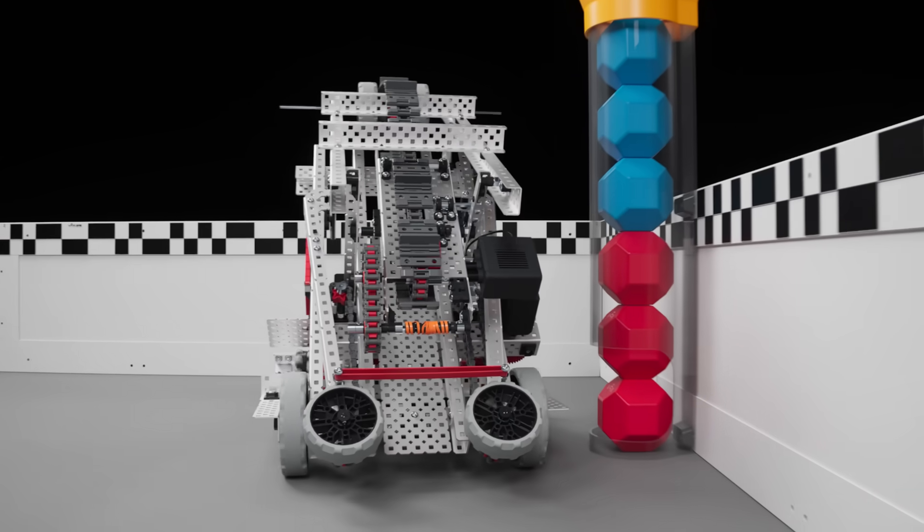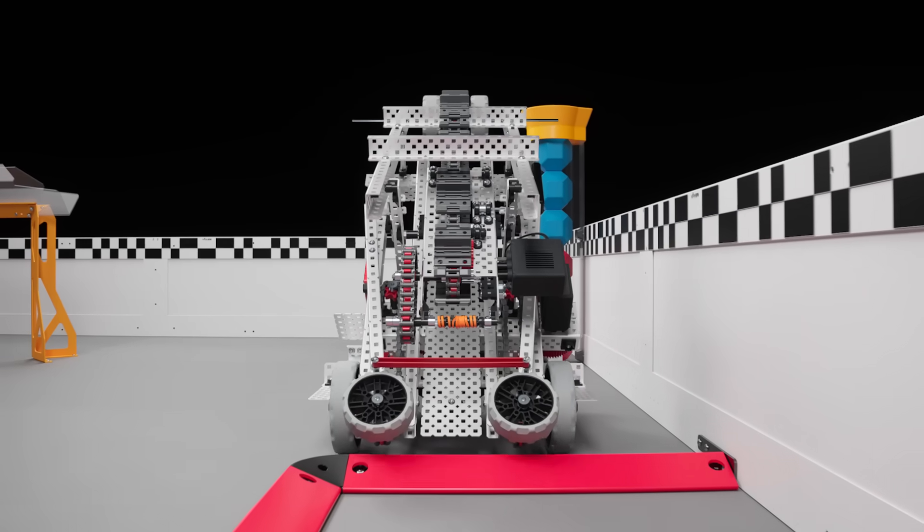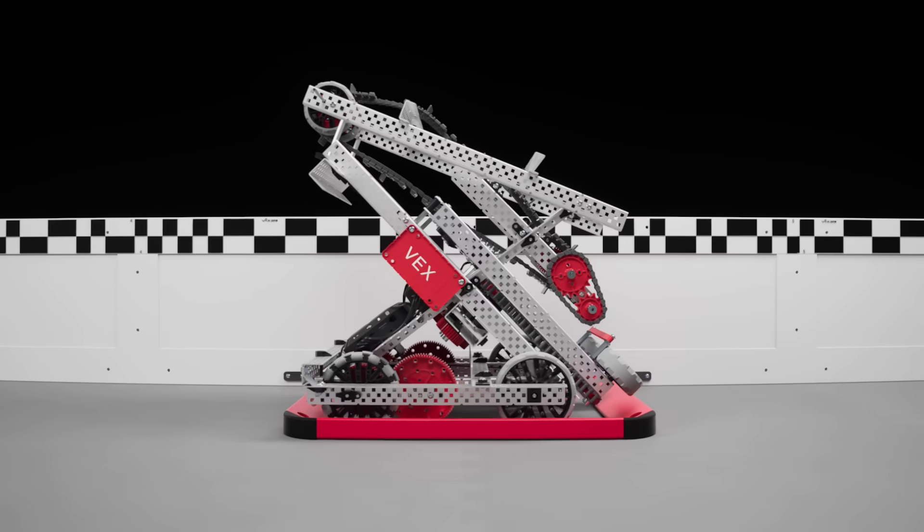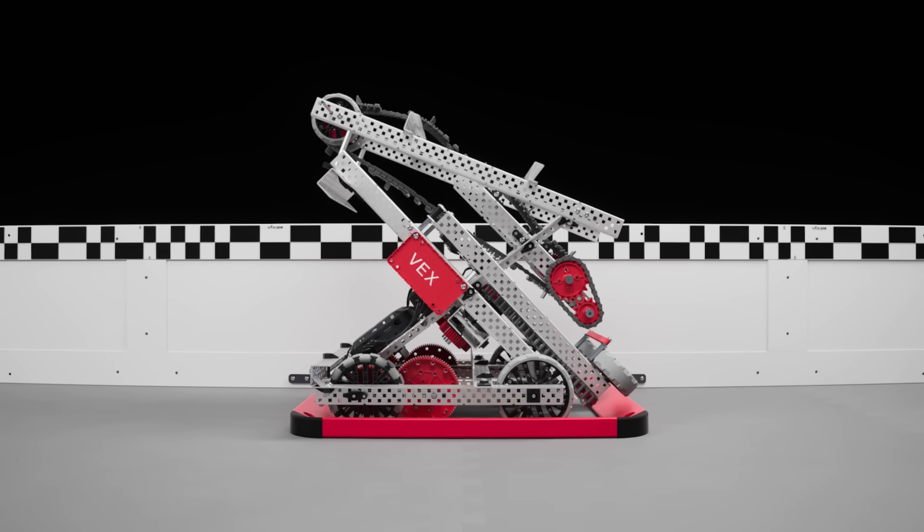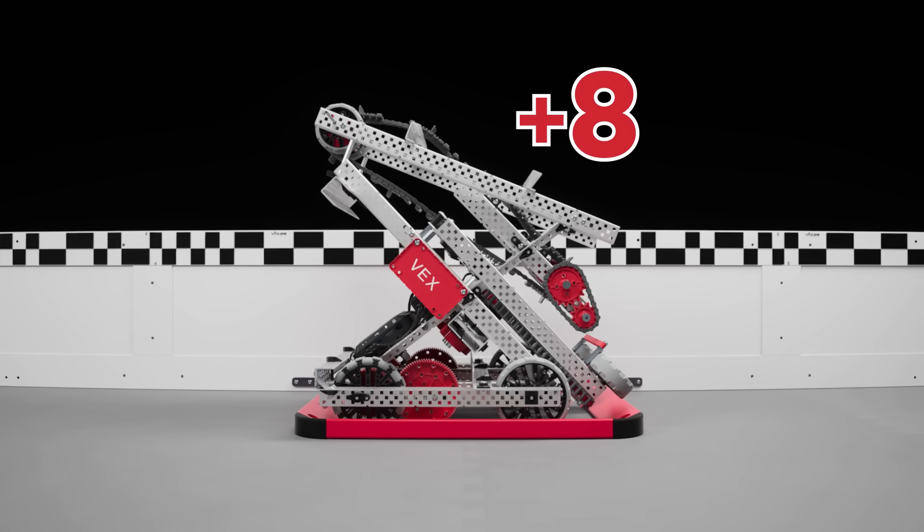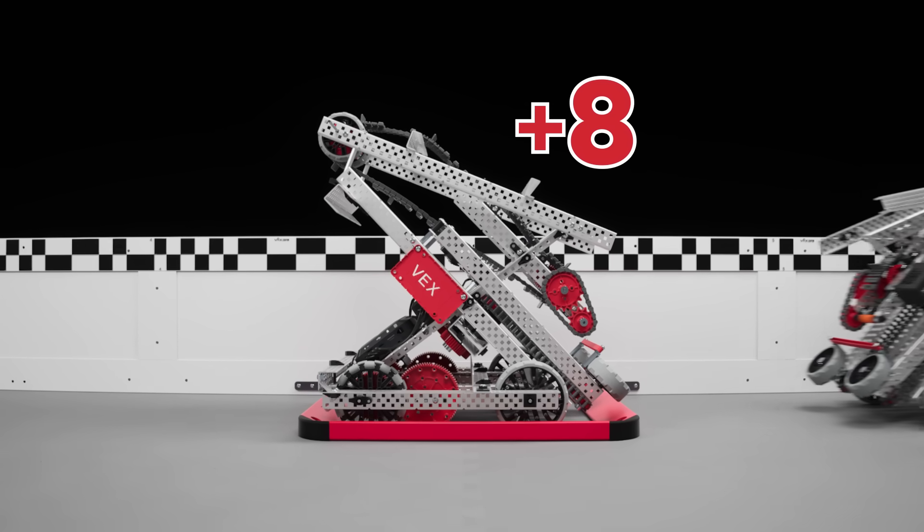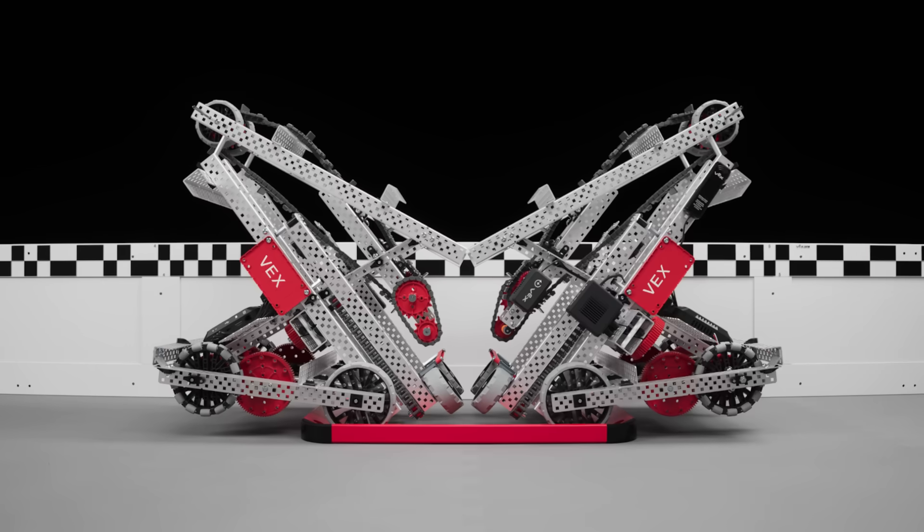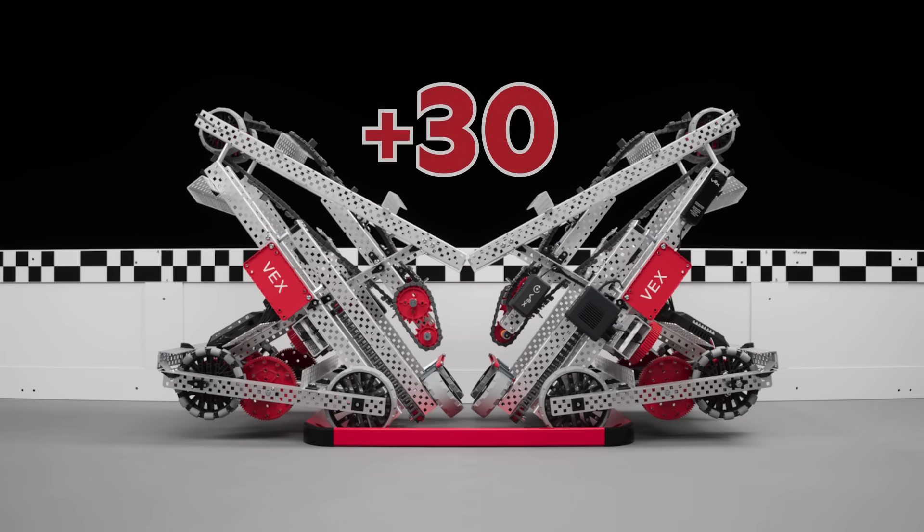At the end of the match, teams can earn additional points by positioning a robot within their alliance's parking zone. One robot inside of the zone receives eight points. Alliances that are able to fit both of their robots inside the parking zone will receive 30 points.